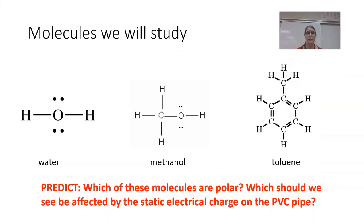So the molecules we're going to study, we're going to look at water, we're going to look at methanol, and we're going to look at toluene. And so right now, you should take a minute to predict which of these molecules are polar, and therefore, which of these molecules should we see be affected by the static electrical charge on the PVC pipe. So take a minute now to make a prediction about the polarity and which molecules we should see affected by the pipe.